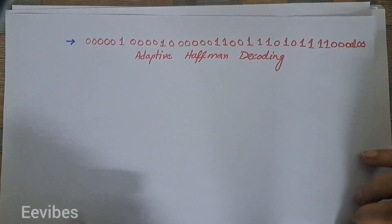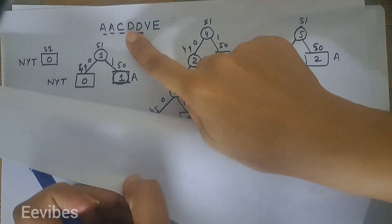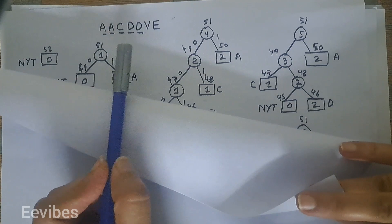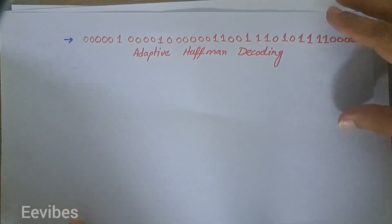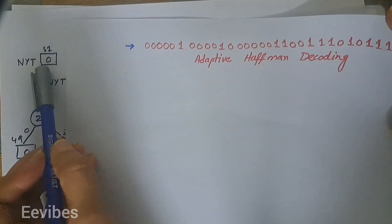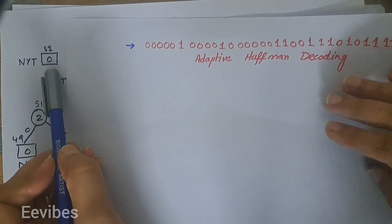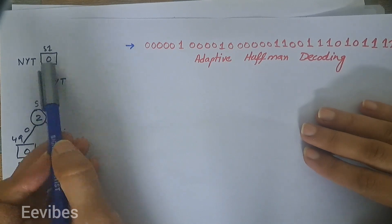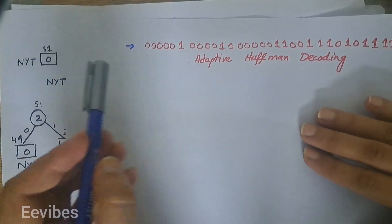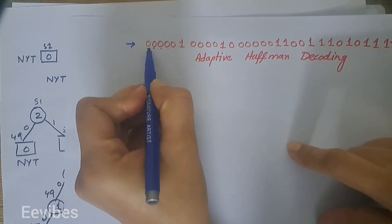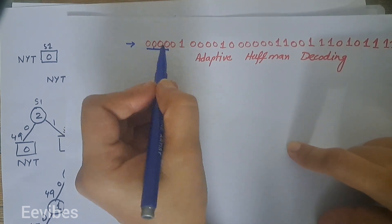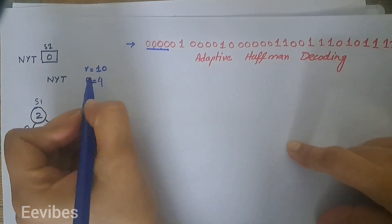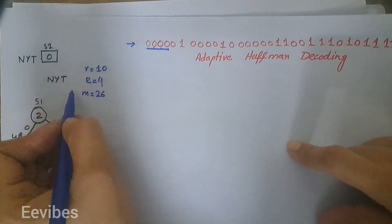Let us start with this binary string that we generated during the encoding of the sequence a, a, c, d, d, v, e, and we will see how we can decode this binary string back into this symbol string. Initially we start with the same NYT node whose weight is zero. Previously we used r=10, e=4, and m=26 during the encoding procedure.